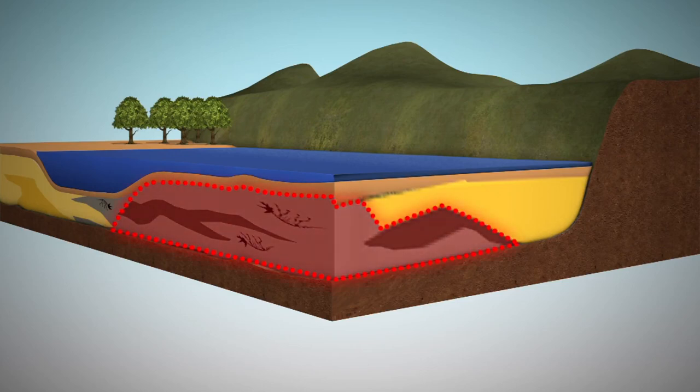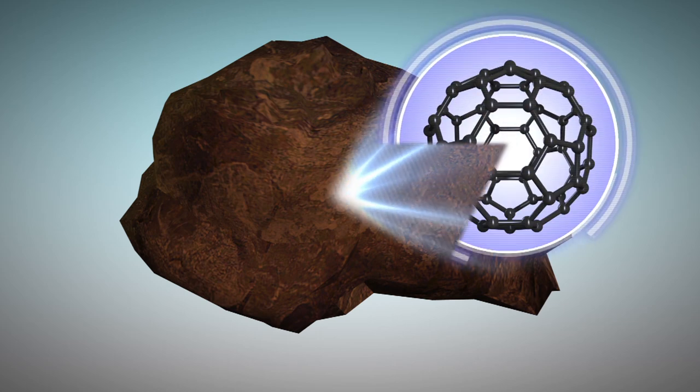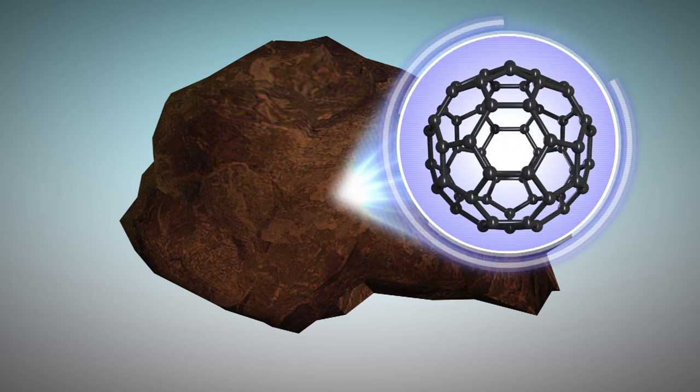Oil shale is found in shallower formations that contain a solid organic material called kerogen.